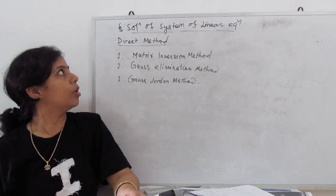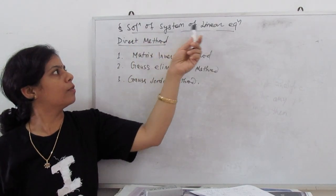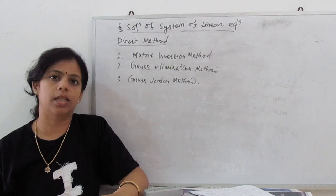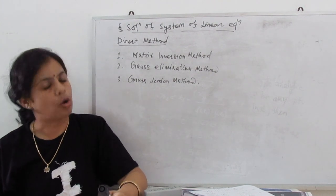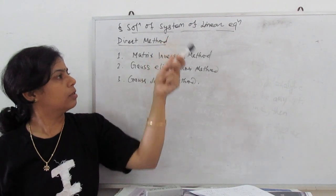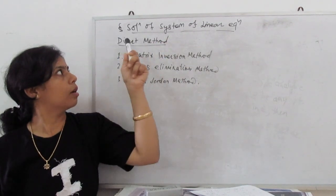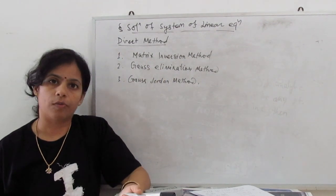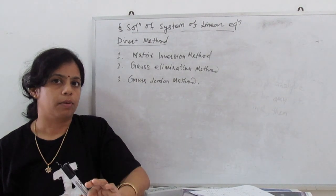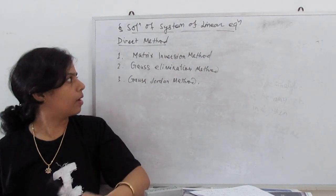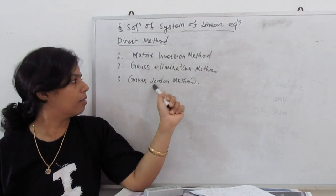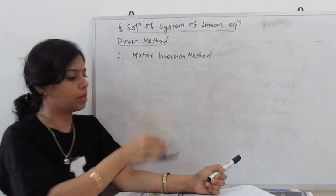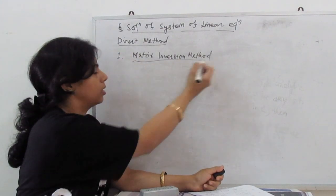Welcome to my new video. Today we discuss the solution of systems of linear equations. If we have a system of linear equations, or simultaneous equations, for two or three variables, we solve this using different methods. The direct methods include: first, the matrix inversion method; second, the Gauss elimination method; and third, the Gauss-Chorton method. We start with the matrix inversion method.